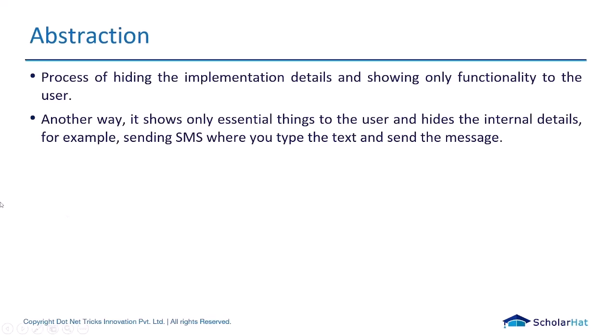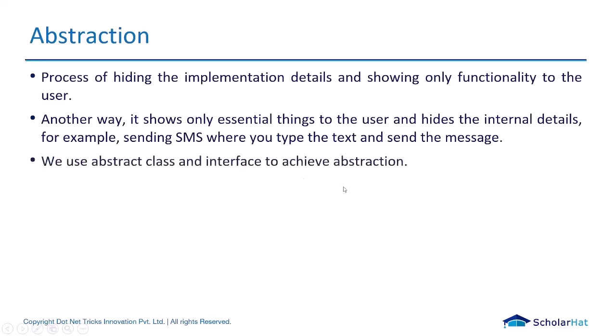Another way to put it: it shows only essential things to the user and hides the internal details. For example, sending an SMS and similar things. That is what abstraction is. We already use the private access modifier, and that is what it is used to achieve in abstraction.